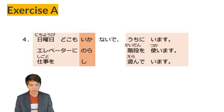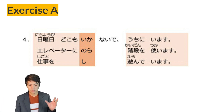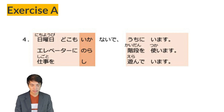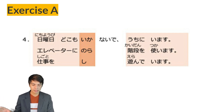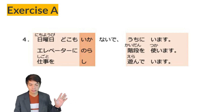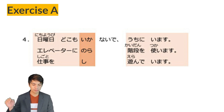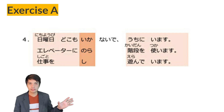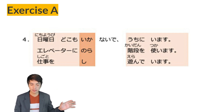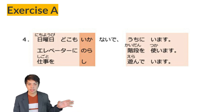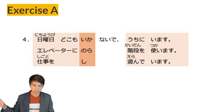Number four. Nichiyoubi doko mo ikanai de uchi ni imasu — on Sunday, without going anywhere, I stay home. Next: Erebeeta ni noranai de kaidan wo tsukaimasu — without using the elevator, I use the stairs. Next: Shigoto wo shinai de asonde imasu — from shigoto wo shimasu, to work. Shigoto wo shinai de, without working — asonde imasu, I'm just enjoying myself. Asobimasu means to play, to enjoy, or to enjoy oneself.